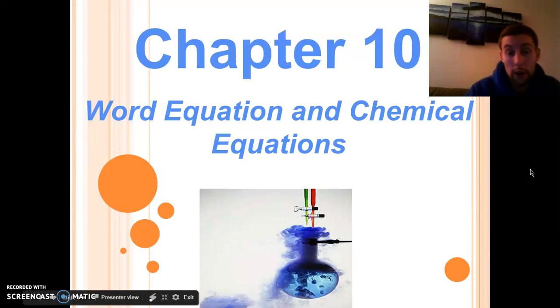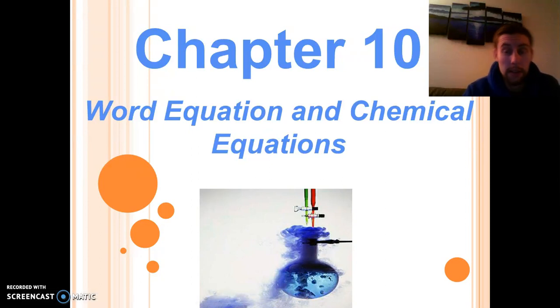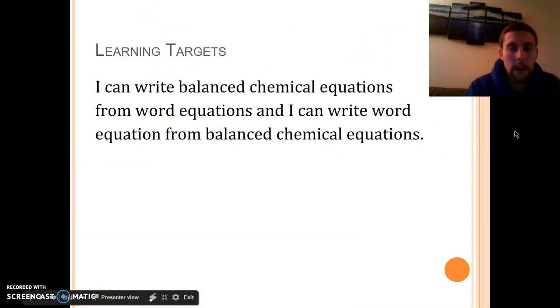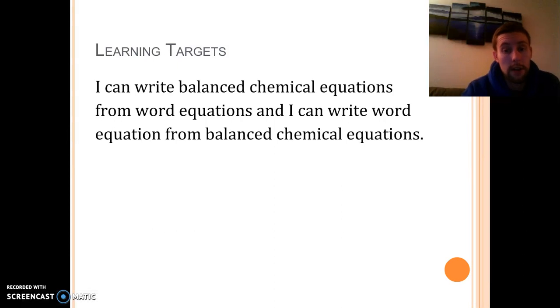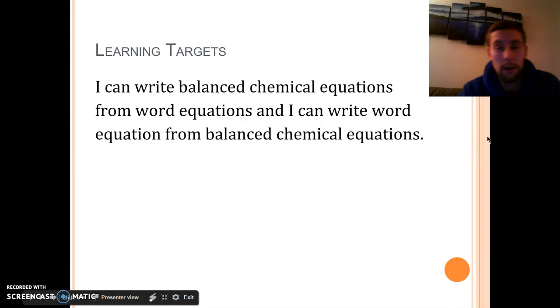Next we're going to look at how to turn word equations, standard words, into chemical equations and vice versa, back and forth. The learning target is I can write a balanced chemical equation from a word equation, and I can write a word equation from a balanced chemical equation. The balance part may or may not be true this year depending on which order we went through things.